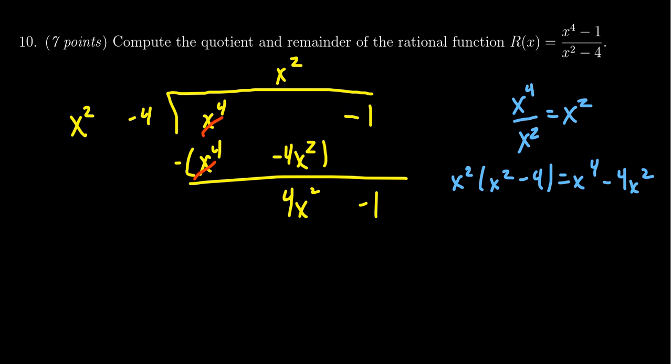We rinse and repeat. Take the leading coefficient of the new dividend, because this will shrink over time, and compare it to the leading term of the divisor. We have 4x squared divided by x squared, which gives us 4. We record that on top, so the quotient is now x squared plus 4. Then we take the divisor and times everything by 4. 4 times x squared minus 4 gives us 4x squared minus 16.